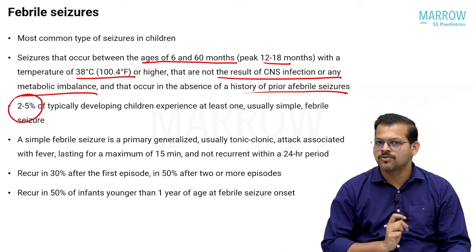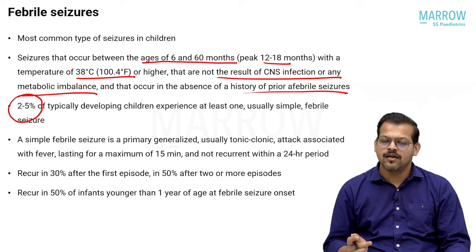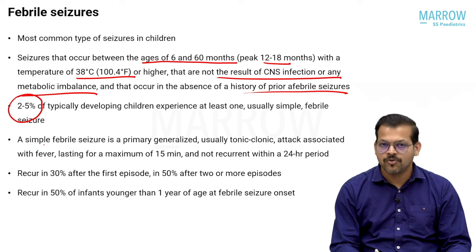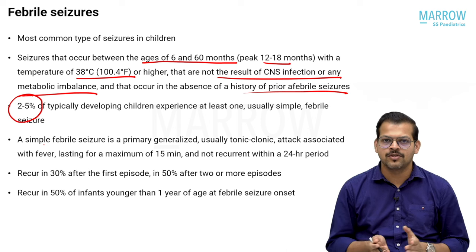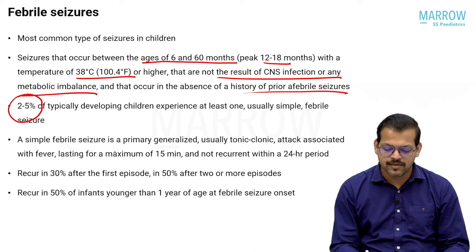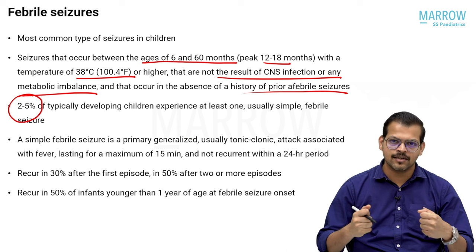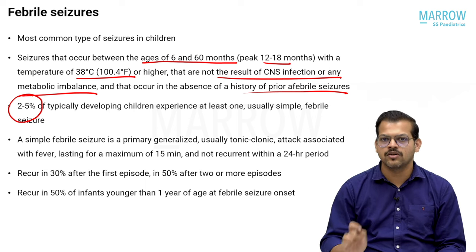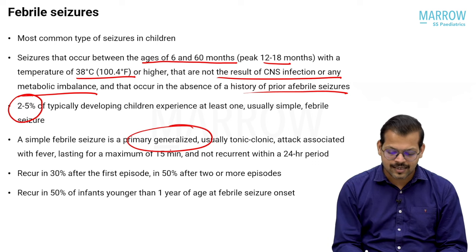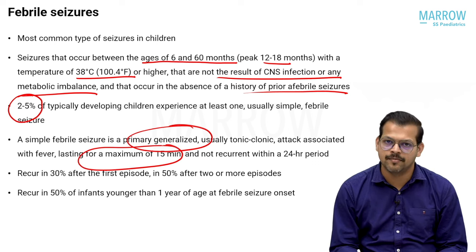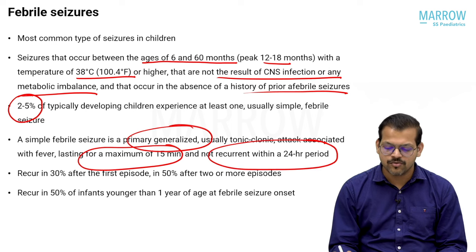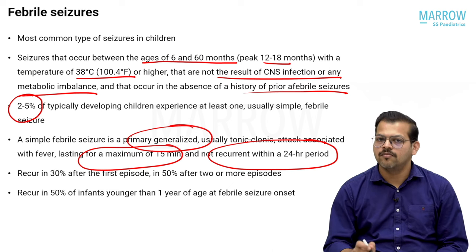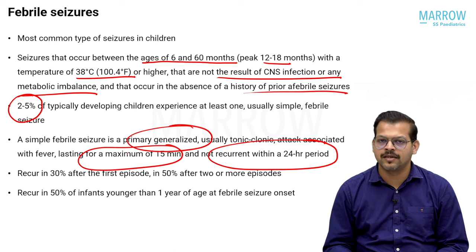The incidence quoted is 2 to 5 percent of all typically developing children. Febrile seizures can be classified as simple or complex (also called typical or atypical). A simple febrile seizure is: (1) generalized — either generalized tonic-clonic or behavioral arrest, without focal features like focal clonic or tonic manifestations; (2) lasting a maximum of 15 minutes (some sources say 10 minutes); and (3) not recurring within a 24-hour period. If any of these criteria are not met, it is called a complex or atypical febrile seizure.